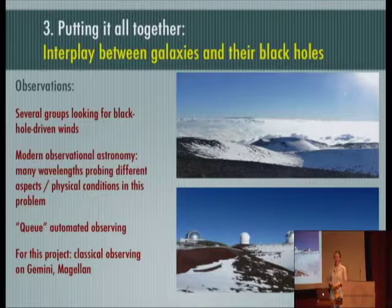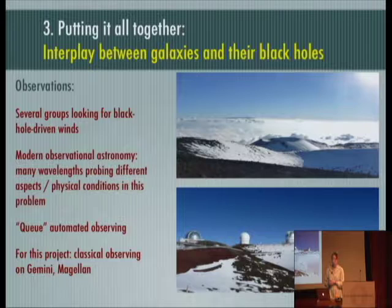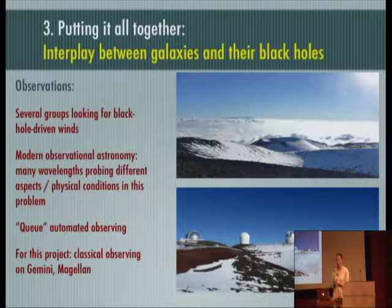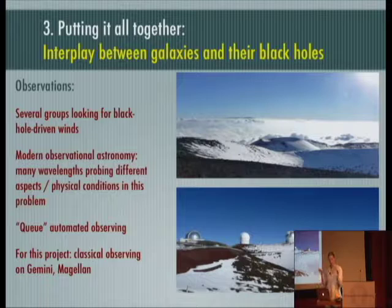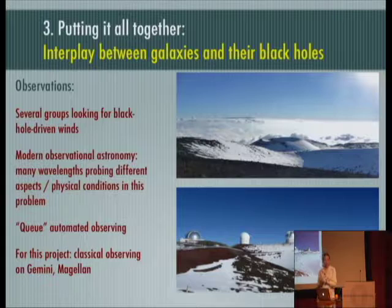This was all theory and numerical simulations — so what about observations? This has been a very active area of research, with several groups looking for black hole-driven winds. There are many different wavelengths in astronomy that can probe different aspects of this complicated problem. Most modern astronomy is done in automated queue mode, where you write a script uploaded to the telescope. However, for this particular project we actually did a classical observing run on the Gemini North Telescope, located on Mauna Kea.